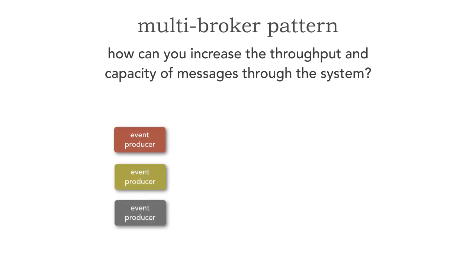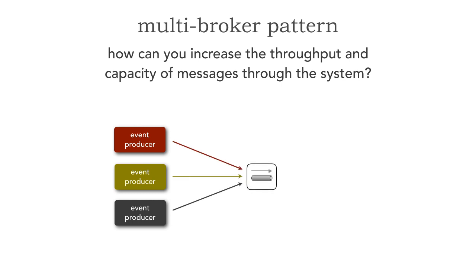Let me show you a scenario. Let's say we have three event producers — systems that are producing events — and they're all writing to a single broker on a queue. We have event consumers that are competing consumers against that queue, so we're processing in parallel. One important thing to note is that generally in this scenario message order is not preserved, which is actually an important point for the pattern I'm going to show you.